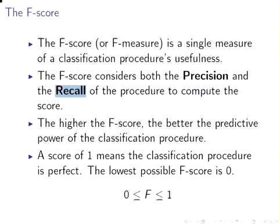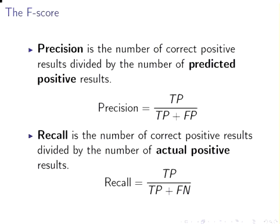It's a way of combining those two results. The higher the F-score, the better the predictive power of the classification procedure. A score of one means the classification procedure is perfect; the lowest possible value is zero. Precision is the total number of correct positive results divided by the total number of predicted positive results.